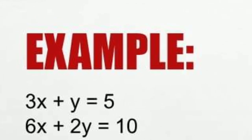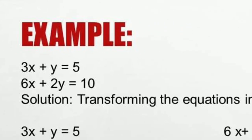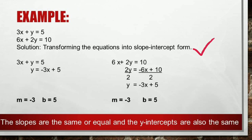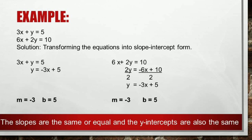Our second example: 3x + y = 5 and 6x + 2y = 10. By transforming the two equations into slope-intercept form, you will see that they come up with the same equation. This system is actually the easiest to identify because you only have to check if the equations are equivalent.